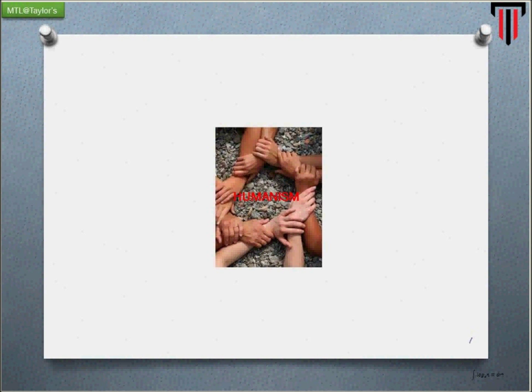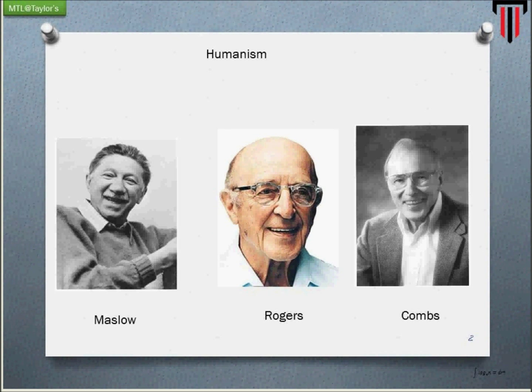The humanistic approach to psychology, as a foundation for curriculum design, brings in the human element. So we have the three elements discussed: the behavioral element, the cognitive element, and now the humanistic element. The three prominent personalities who had an impact on the emergence of humanistic psychology are Abraham Maslow, Carl Rogers, and Arthur Combs.